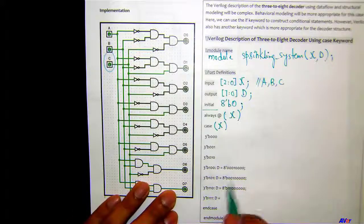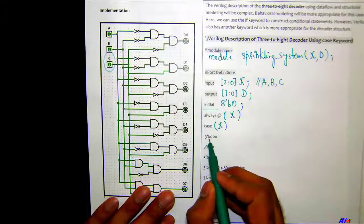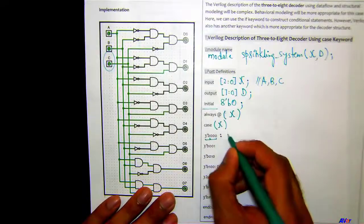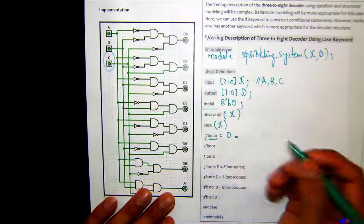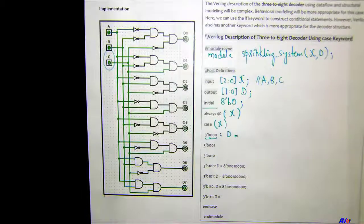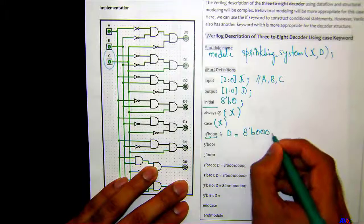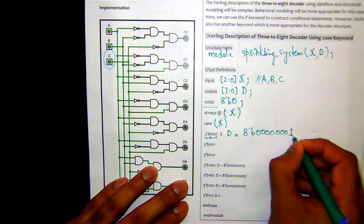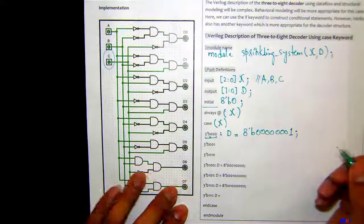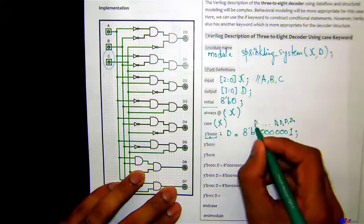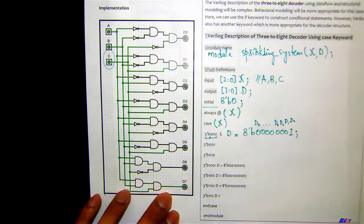Notice there's no semicolon after the case statement. When the three bits are set to triple zero, sprinkler D0 should be working and the rest should be off. So D equals 8'b00000001 — all off except D0. D0 is the rightmost bit, then D1, D2, D3, up to D7 on the left.